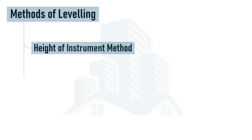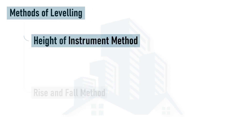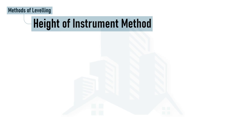or by the rise and fall method. These are the two commonly used methods. When we are using an automatic level or a total level, these two methods can be used to determine the heights of different positions. But if we are using a total station, then we don't need these methods. Let's discuss the first method: the height of instrument method.